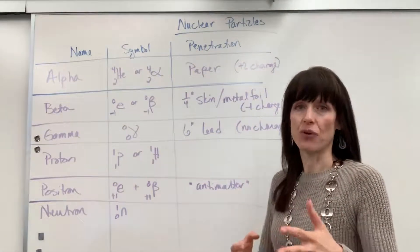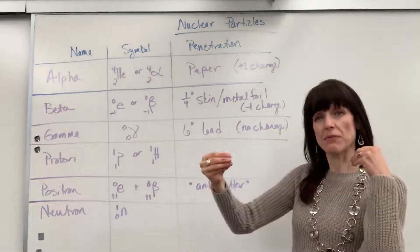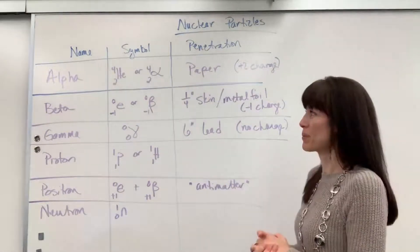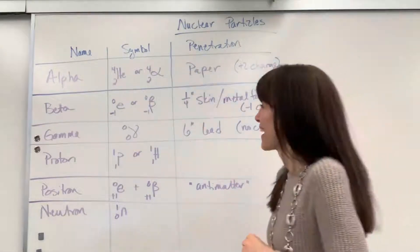So you're thinking like tin foil, aluminum foil, gold foil. So a thin piece of metal would be able to stop a beta particle. That would be its penetration power. So it would definitely be able to go through paper.